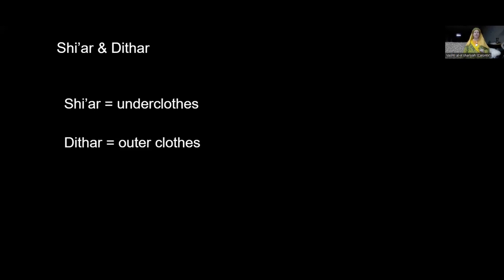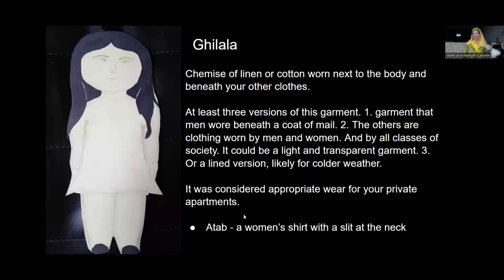Now let's switch to clothing terms. Shiar is your underwear — the garments worn right up against the body. Dithar is anything you wear over that; those are categories of clothing. Gilala is usually a chemise of linen or cotton worn next to the body underneath other layers — a body shirt or dress. I found at least three variations: one is what men wore beneath a coat of mail, usually quilted like a gambeson. The others are worn by both men and women of all classes. There is a summer version that is light and nearly transparent, and a lined or quilted version for cold weather.